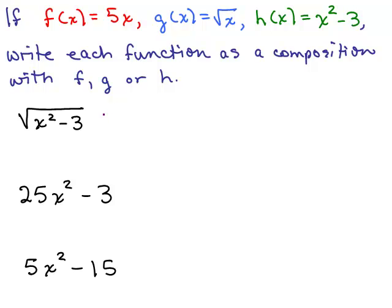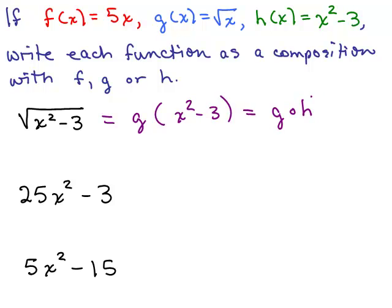The trick here is to say: this is really g(x² - 3), because it's the square root of x² - 3, and g(x) = √x. Now, what about x² - 3? I look back up, and that's h(x). So this is really g(h(x)).